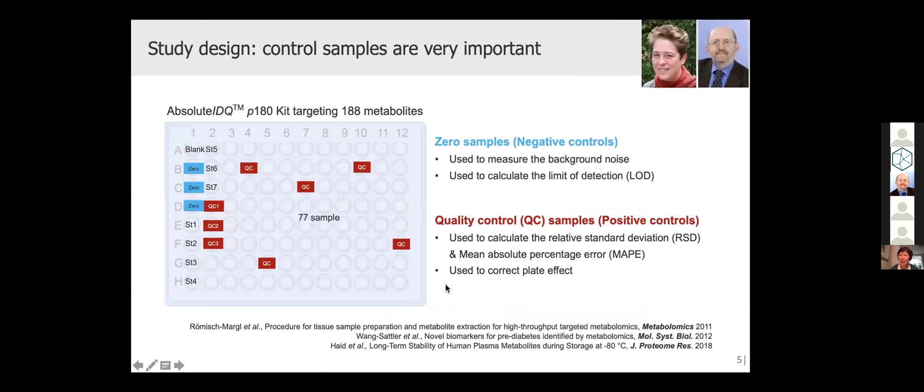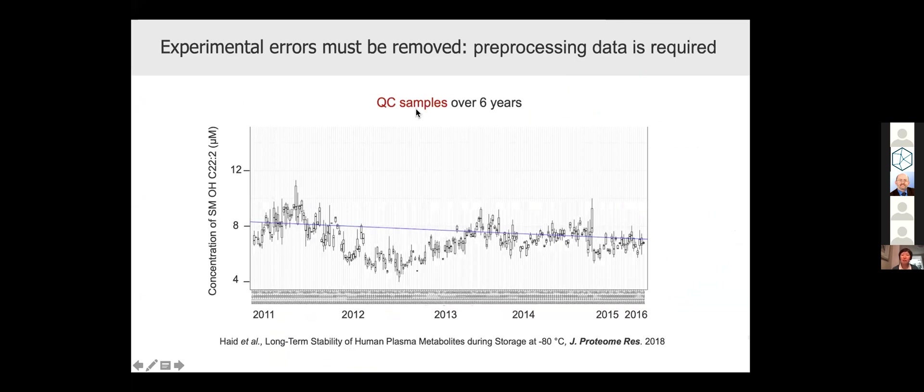It is very important to include positive and negative control samples in the study design to evaluate the variations of each targeted metabolite. For example, here I show you one metabolite concentration over six time points for the identical QC samples. You see there are variations and data preprocessing must be done.